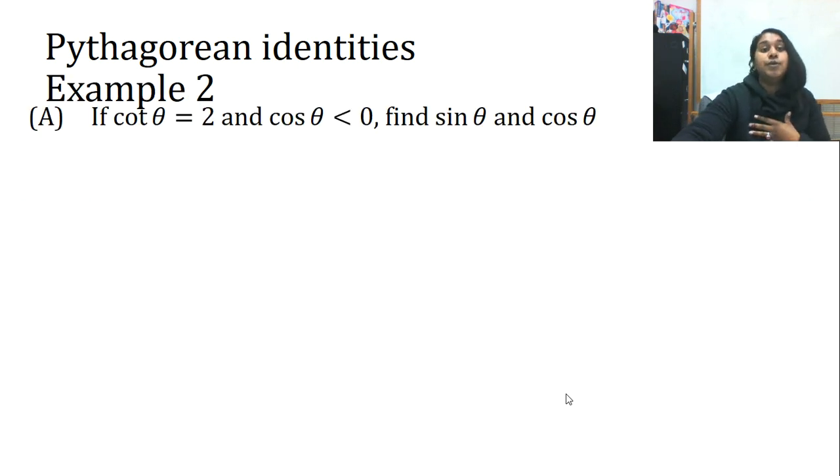So, if cotangent theta is equal to 2 and cosine theta is less than 0, what does that mean? It means it is negative. Then I want you to find sine and cosine.